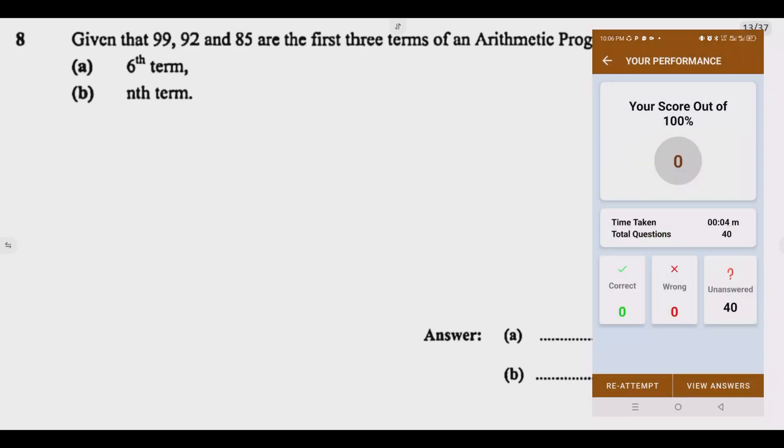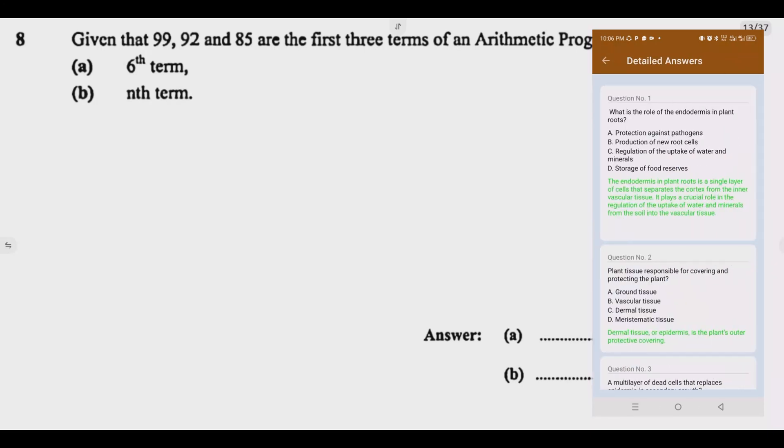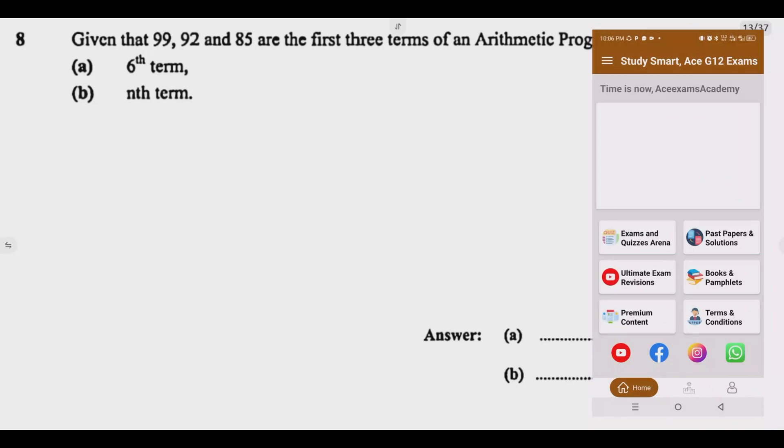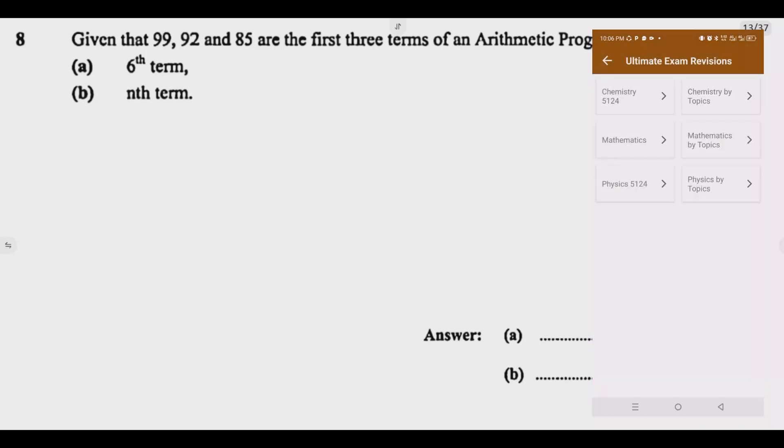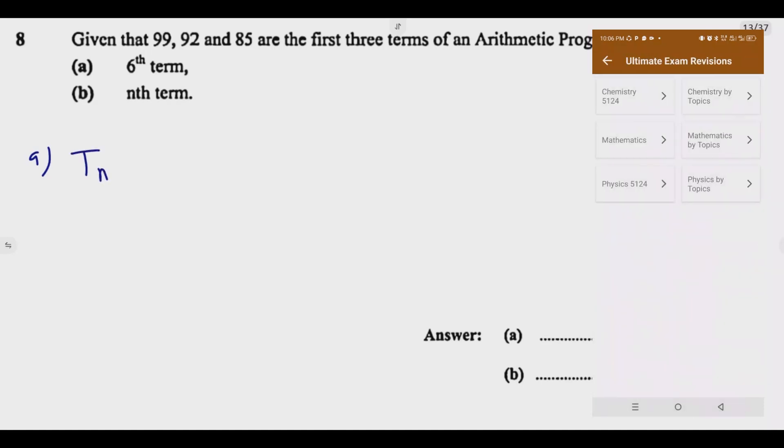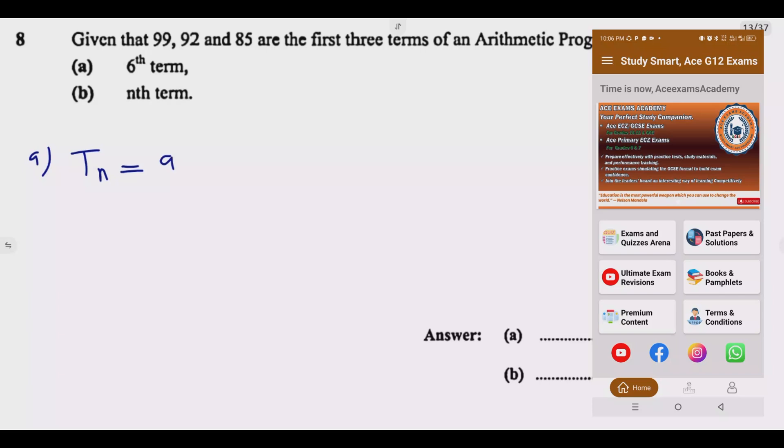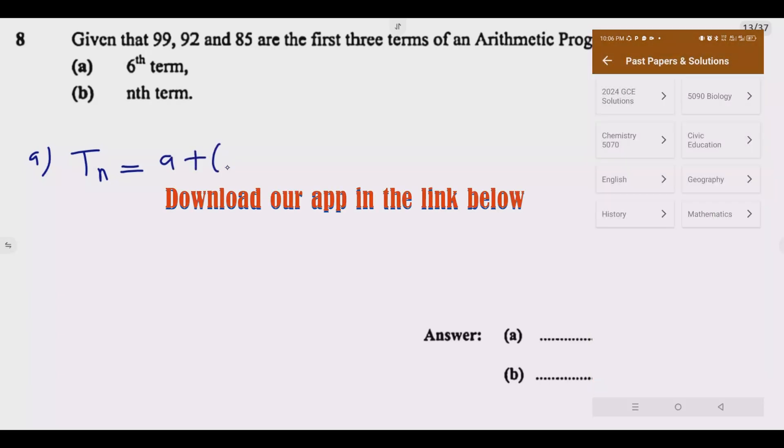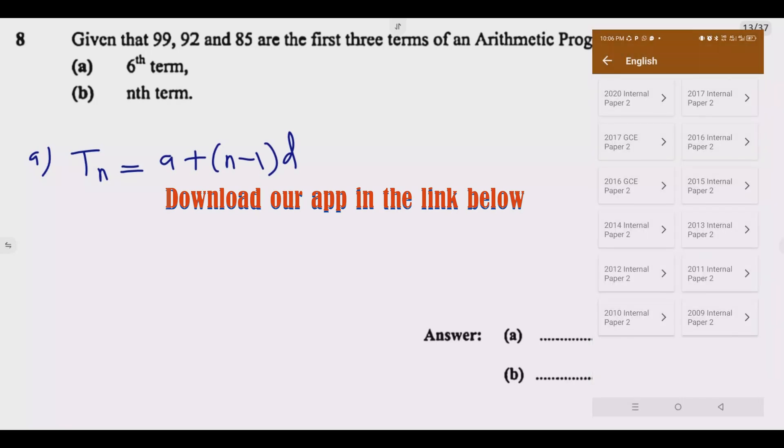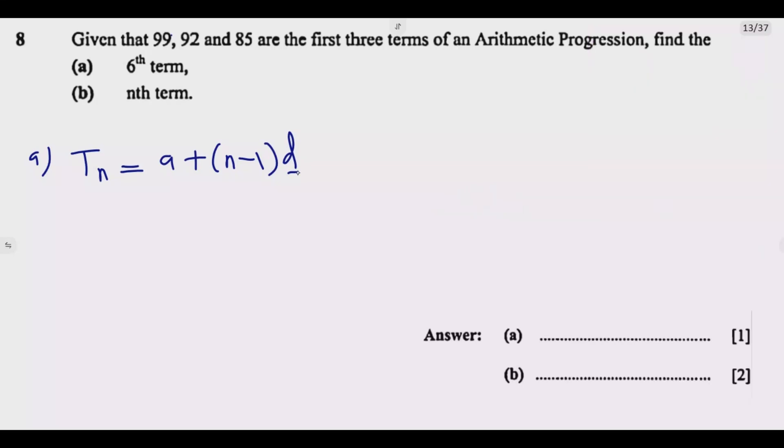Once you understand the key principles, this question is a giveaway. The general formula of an arithmetic progression is Tn equals the first term plus (n minus 1) times the difference. What is key is finding the difference. The first term in this case is 99, so a equals 99.